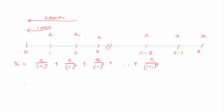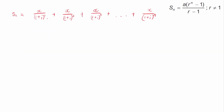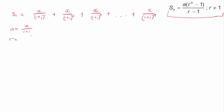Looking at this series, our first term a is x over (1 + i). We're going to use the sum of n terms formula for a geometric series: S_n = a × (r^n − 1) / (r − 1). This is a geometric series, where the first term is a and r is the common ratio. Every successive term is multiplied by 1 over (1 + i), so our common ratio r is 1 over (1 + i). That's why the exponent increases by one each time.